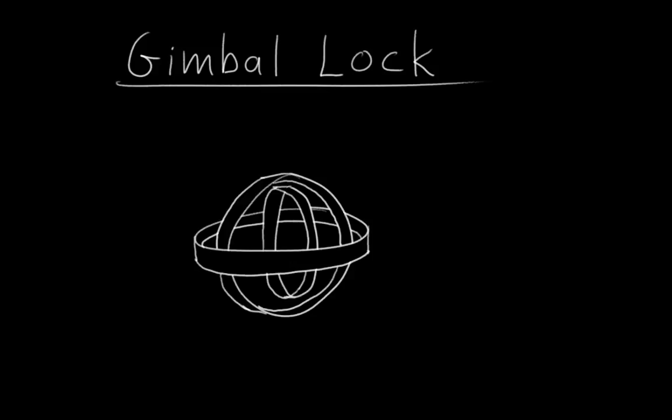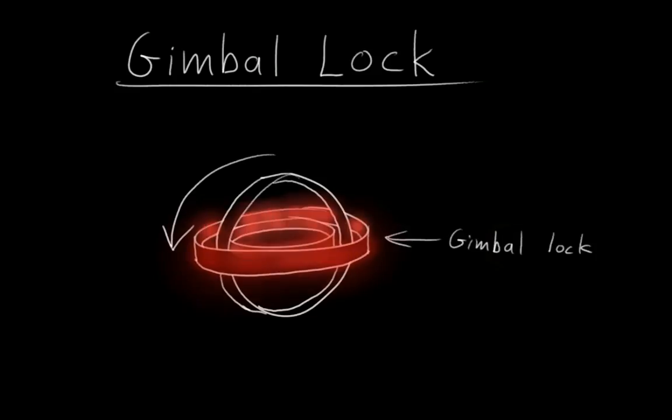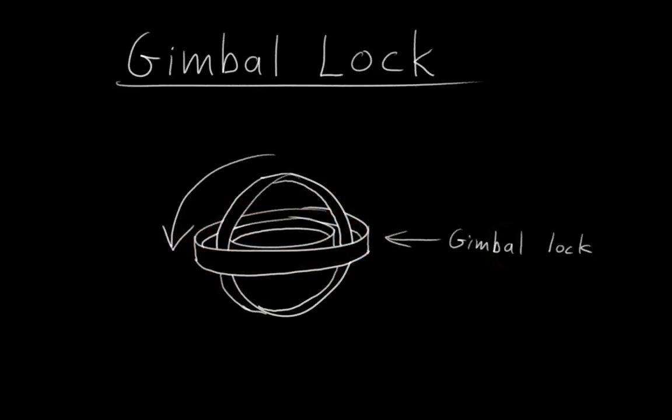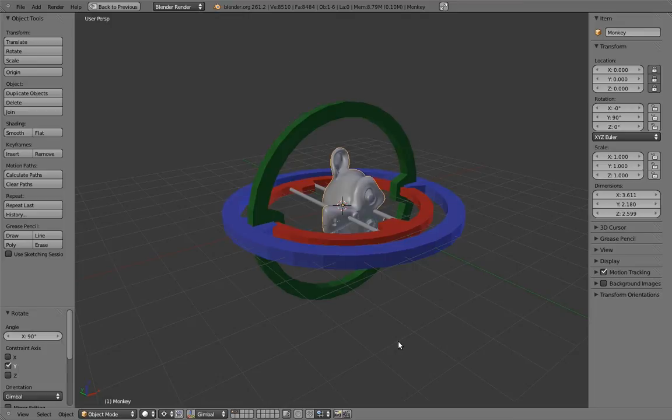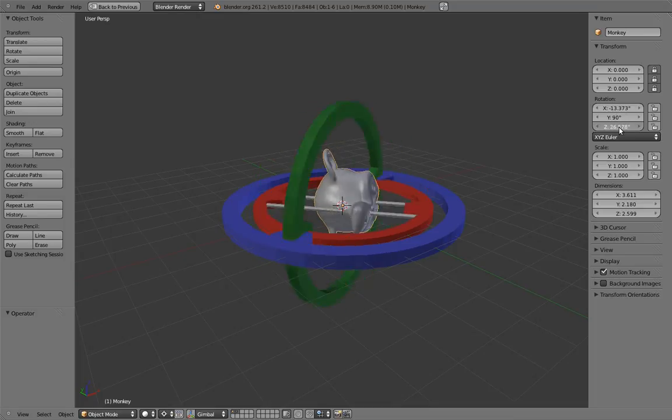Gimbal Lock is something that happens in three-axis Euler rotations, where the innermost ring becomes aligned with the outermost ring. This is actually really easy to accomplish. Just rotate the mid-ring 90 degrees. When the middle axis is rotated 90 degrees like this, we have essentially lost an axis of rotation, because two of the axes are now exactly the same.